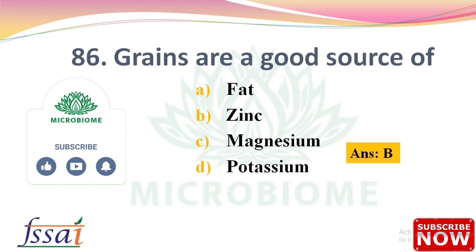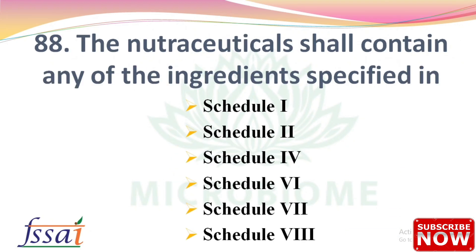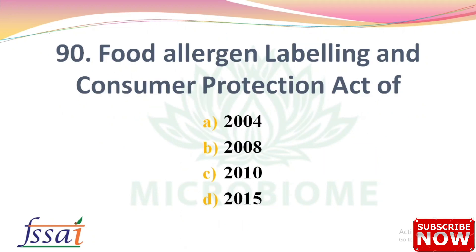Next: Dash major sources are meat, milk, and dairy products — options: riboflavin, folate, cobalamin, none of these. The right answer is option A, riboflavin. Next: Nutraceuticals shall contain any of the ingredients specified in schedules 1, 2, 4, 6, 7, and 8. Next: Dash present in foods like wheat germ, soybean, peanuts, and skim milk may prevent the formation of fatty liver — options: acids, choline, alcohols, ether. The right answer is option B, choline.